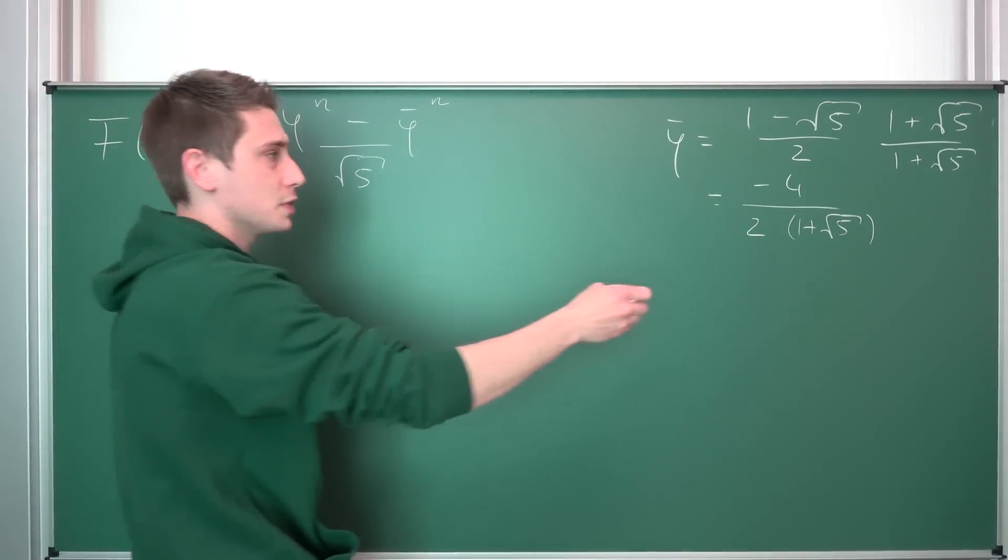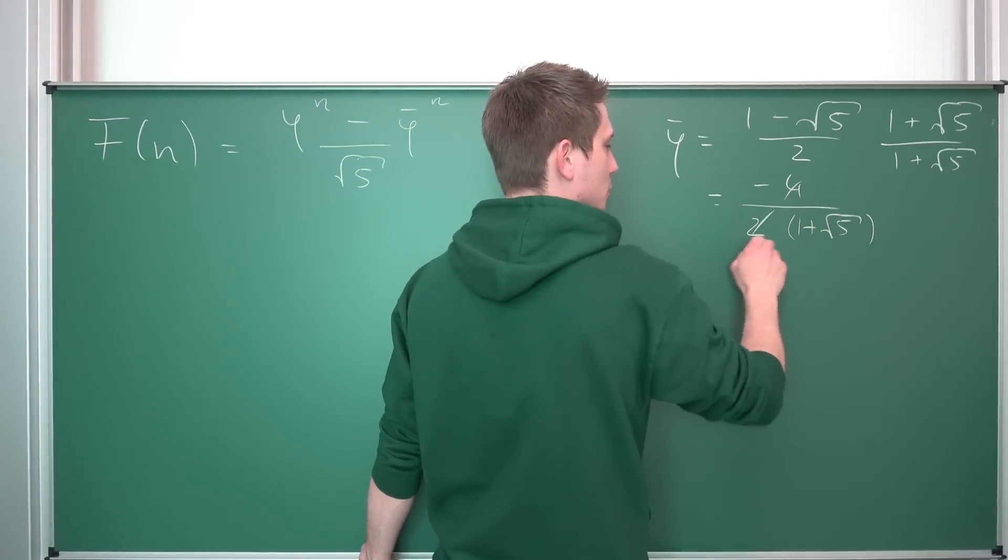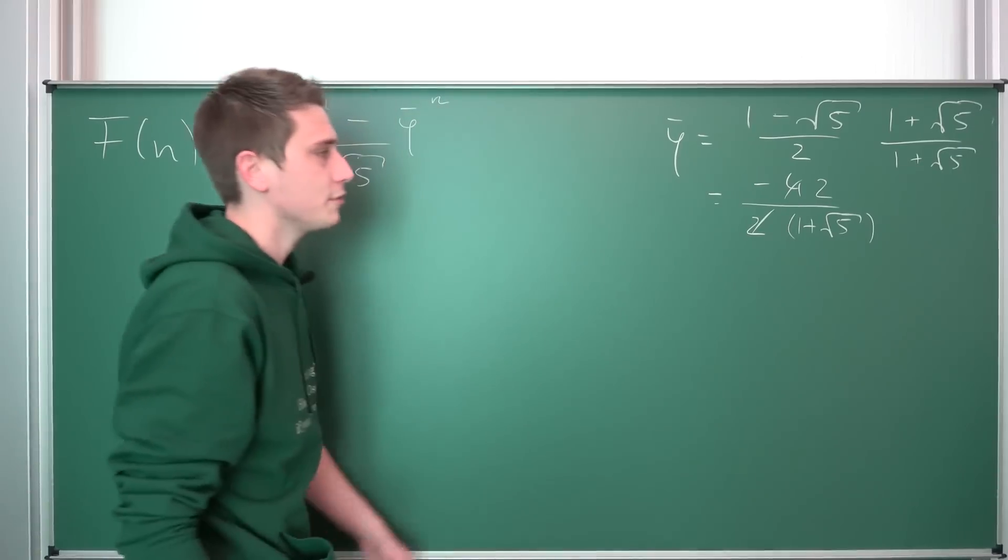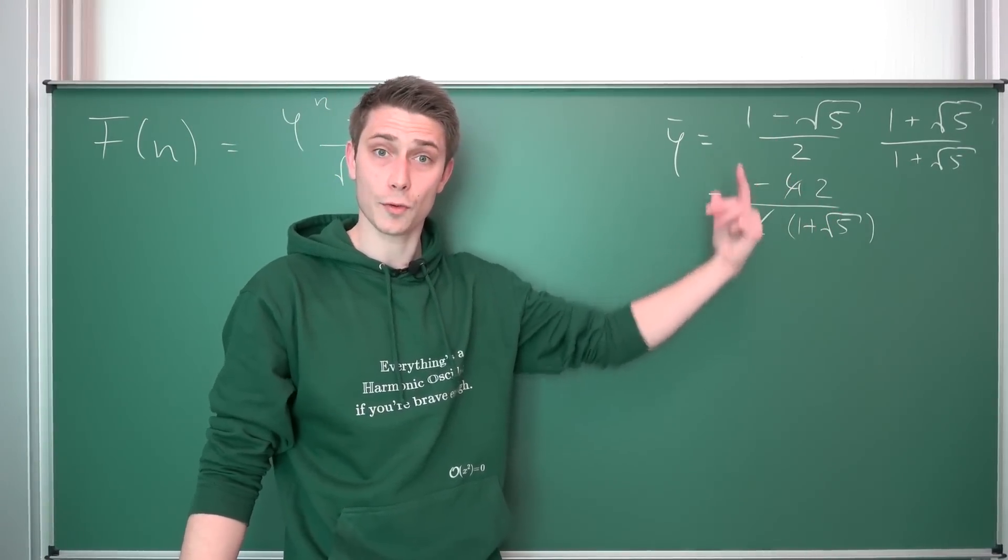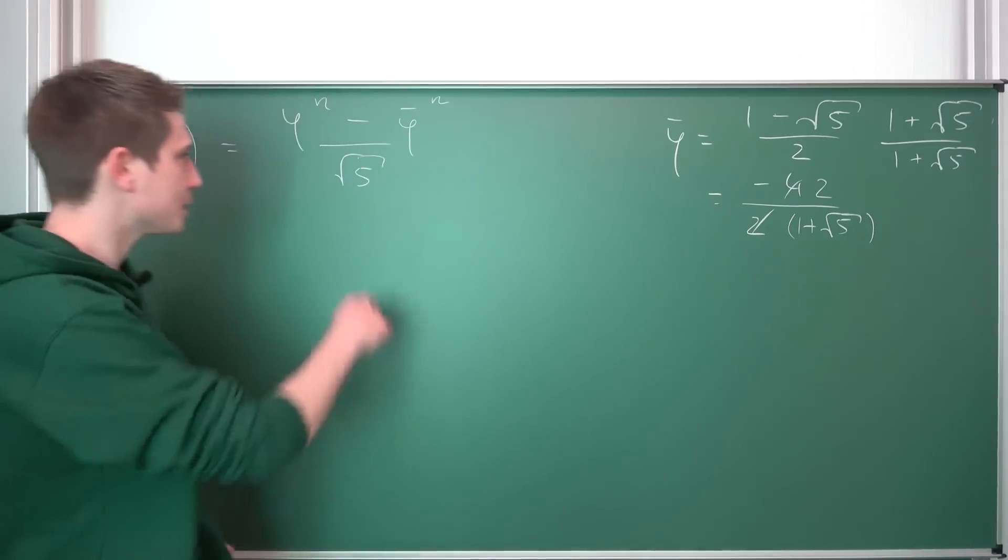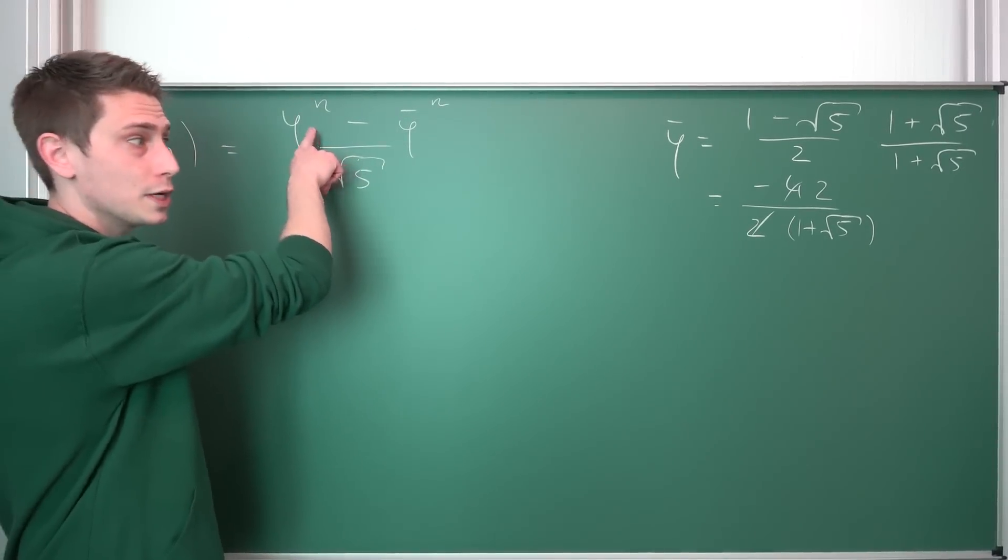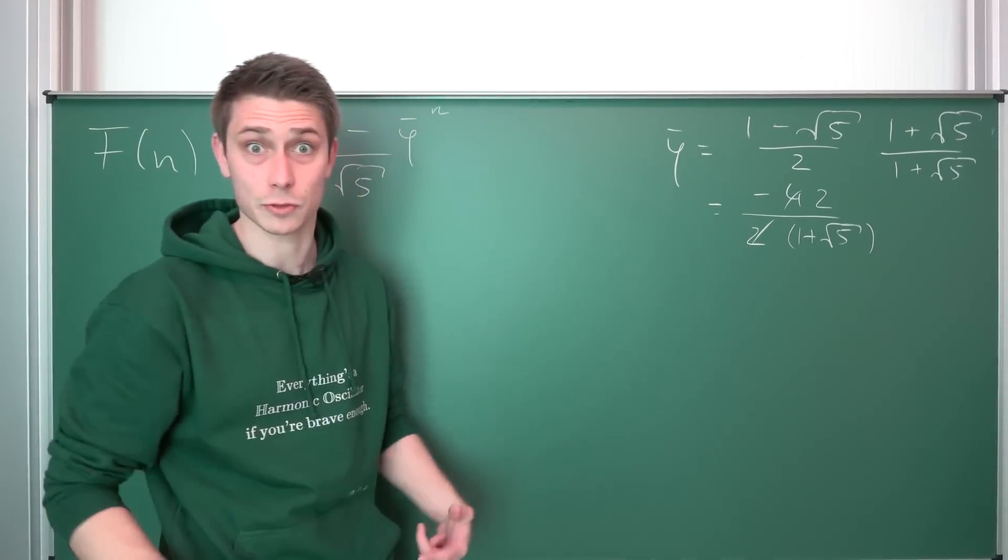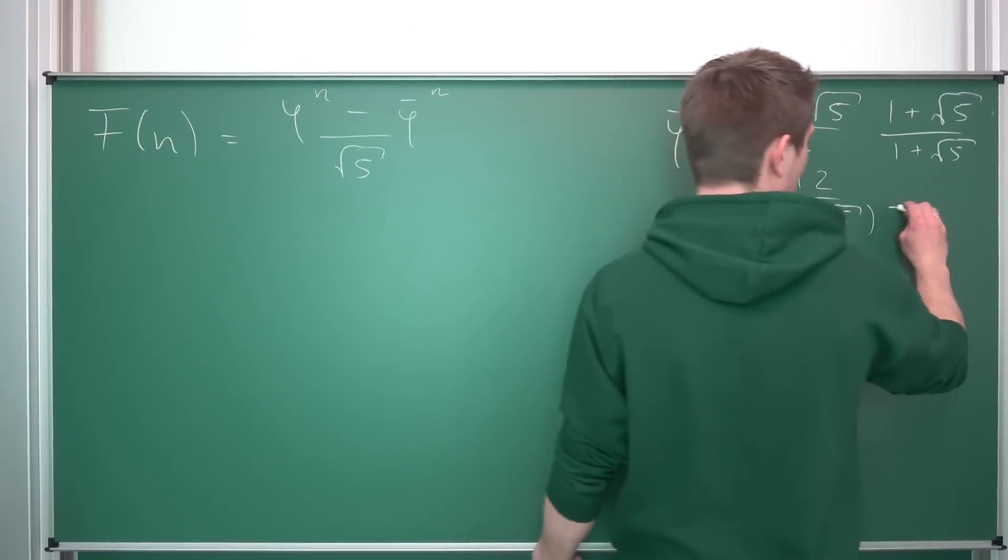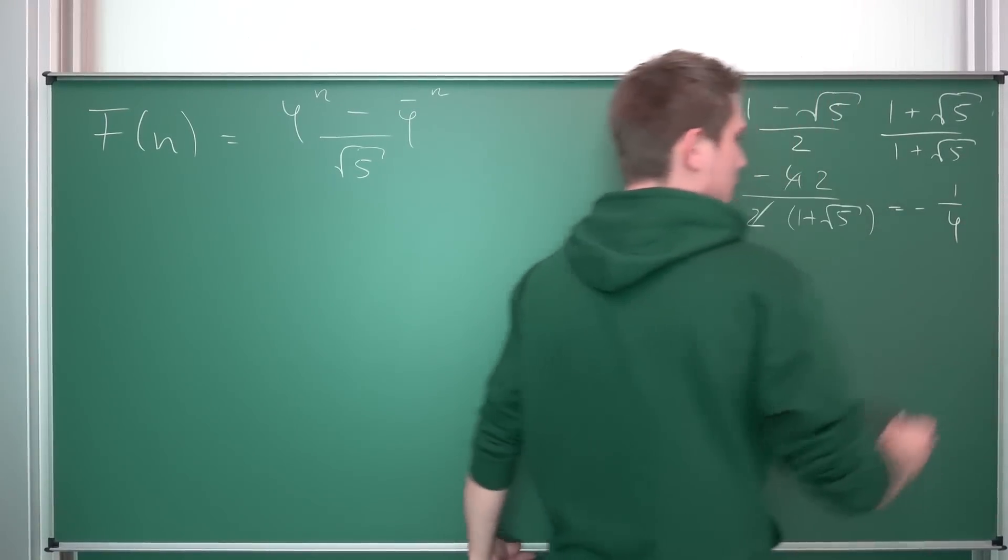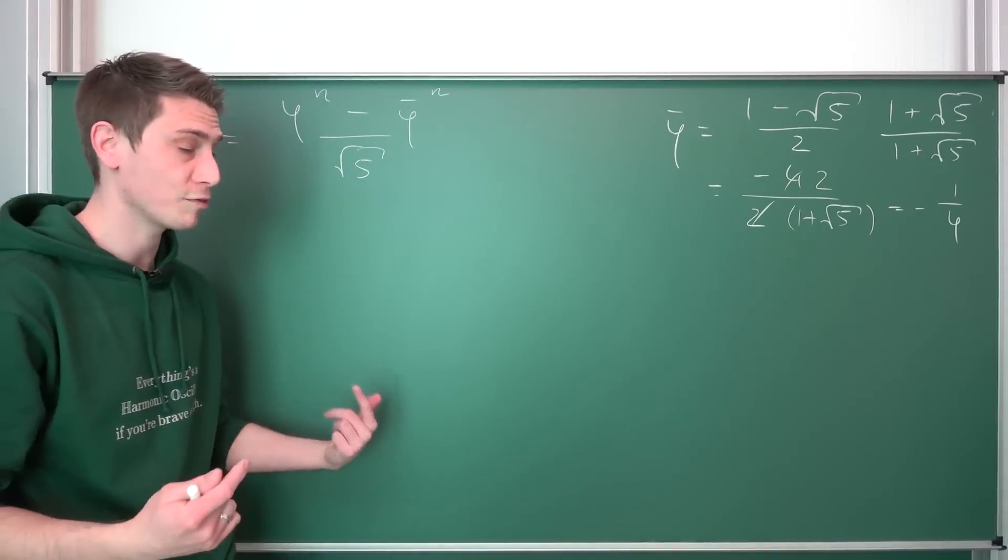Now, like I said, 4 is 2 times 2, meaning the 2 is going to cancel out. And what we have here is negative 2 over 1 plus the square root of 5. 2 over 1 plus the square root of 5 is just 1 over the golden ratio. So this is negative 1 over phi. So negative phi to negative 1 power.